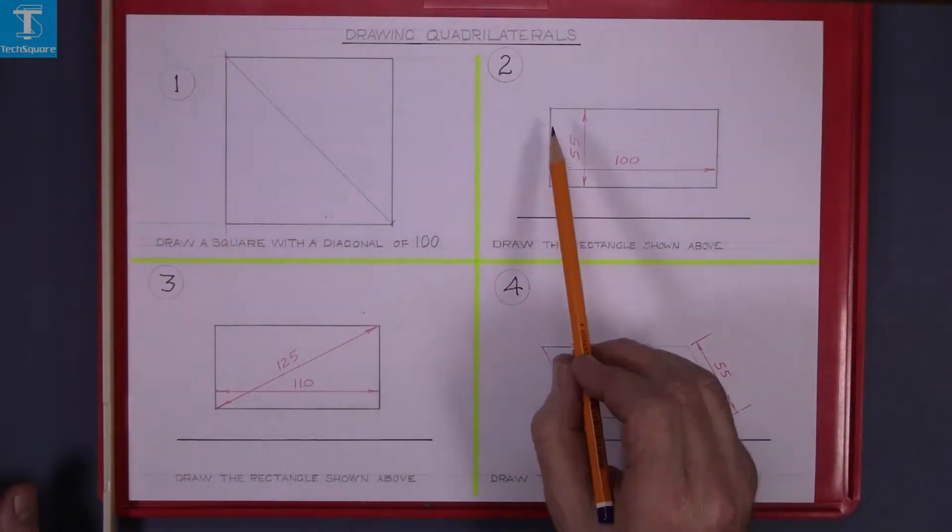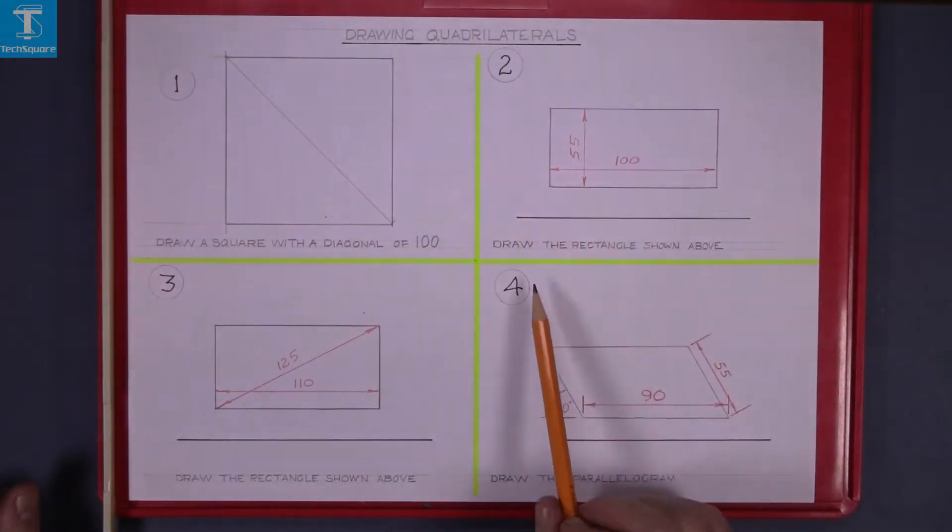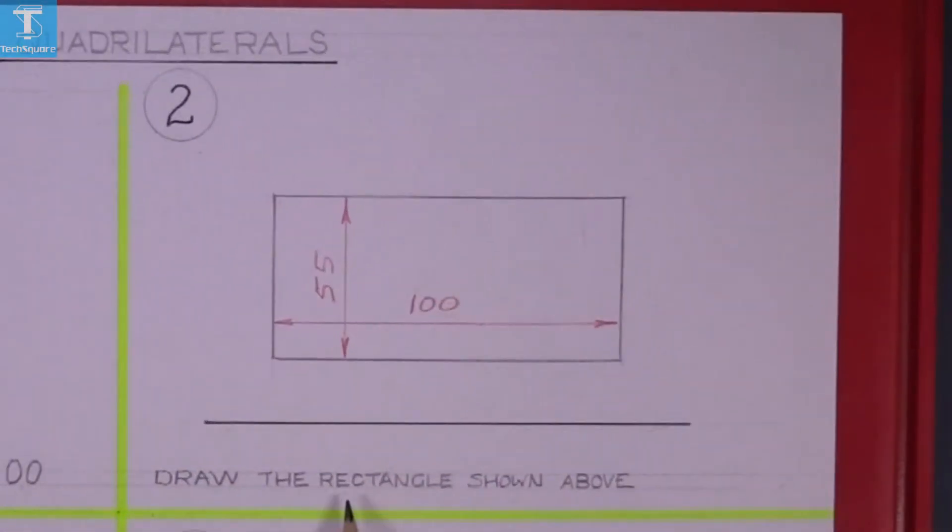Now we are going on to question 2. We are asked to draw a rectangle with the measurements shown above. So the base of the rectangle is to be 100 millimetres and the side is 55.